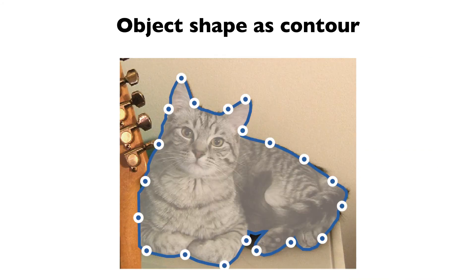An alternative representation for the object shape is the object contour, which is a set of vertices along the object silhouette. In contrast to pixel-based representation, a contour is not limited within a bounding box and has fewer parameters.